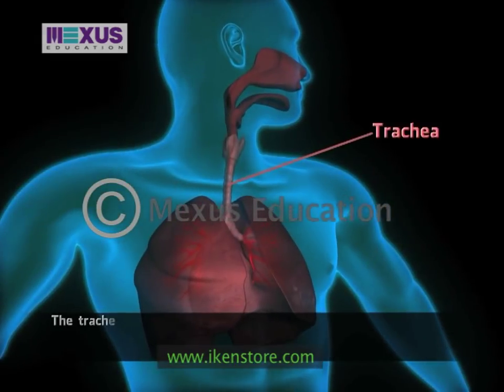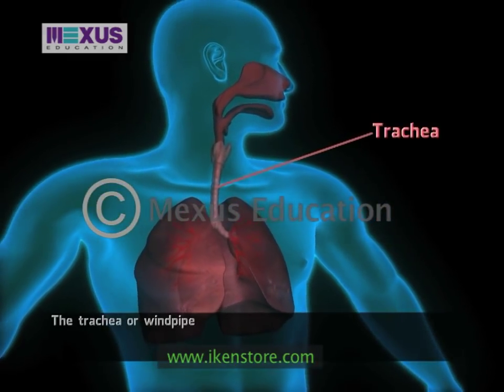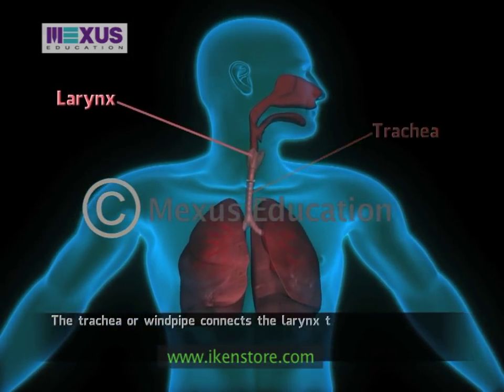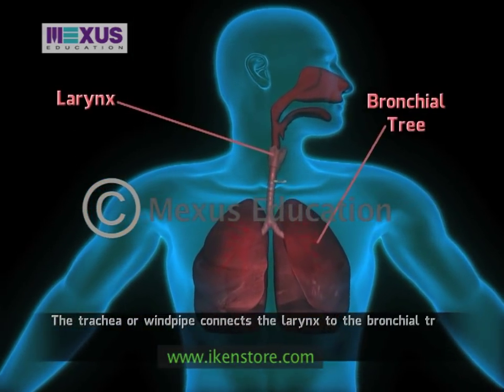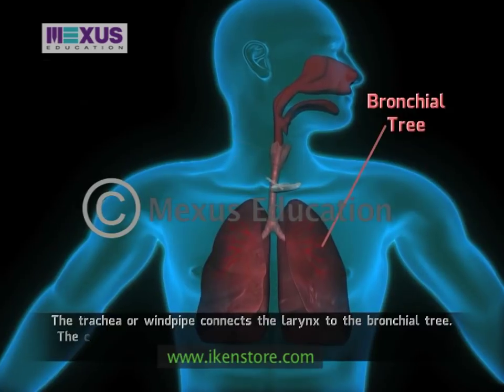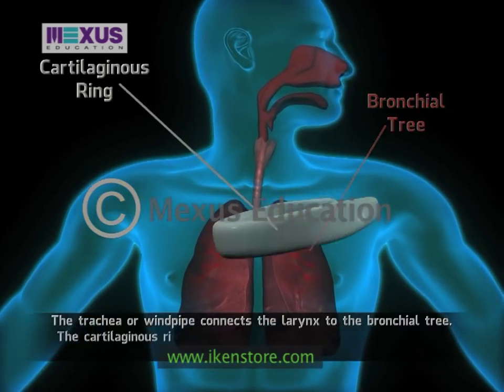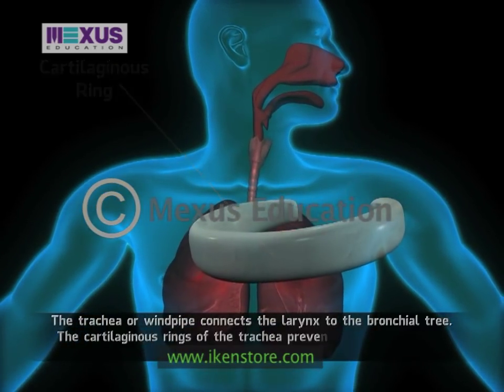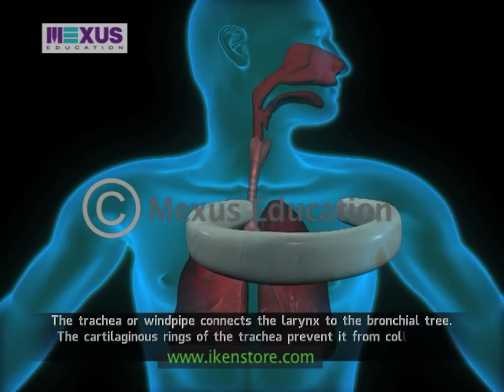The trachea, or windpipe, connects the larynx to the bronchial tree. The cartilaginous rings of the trachea prevent it from collapsing.